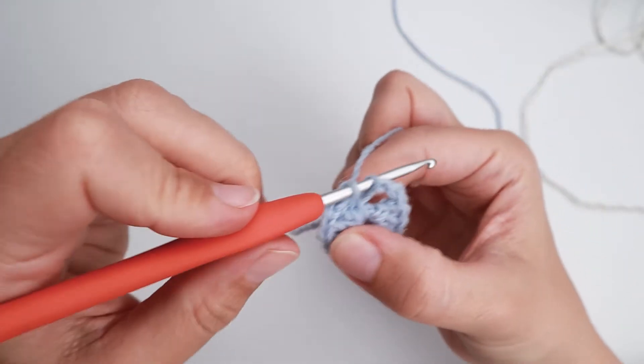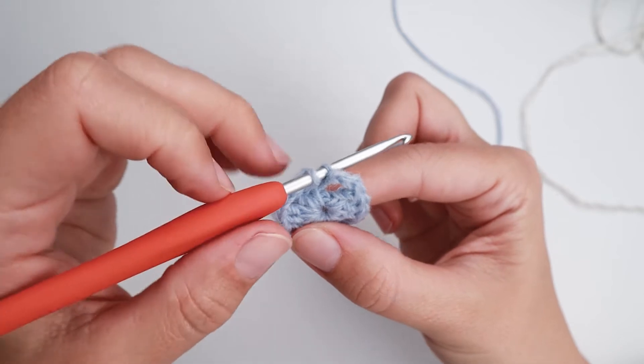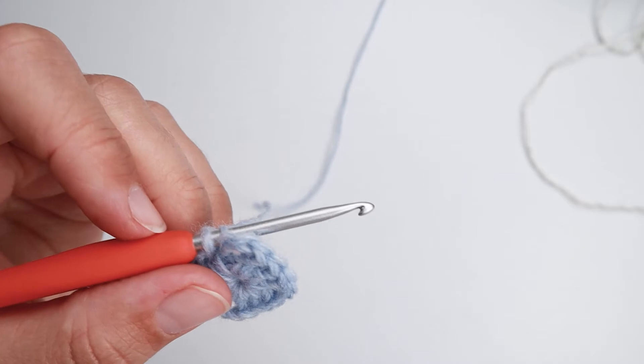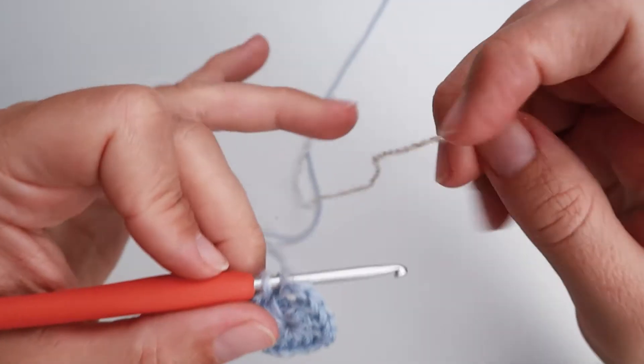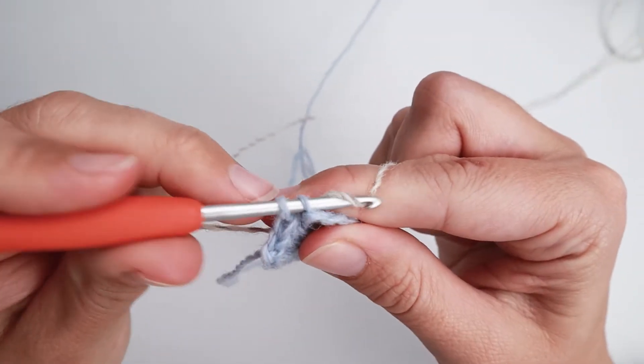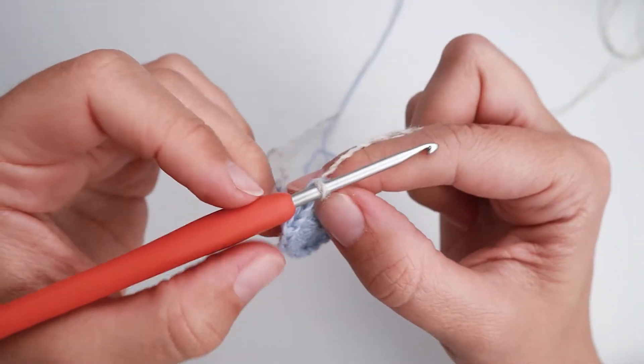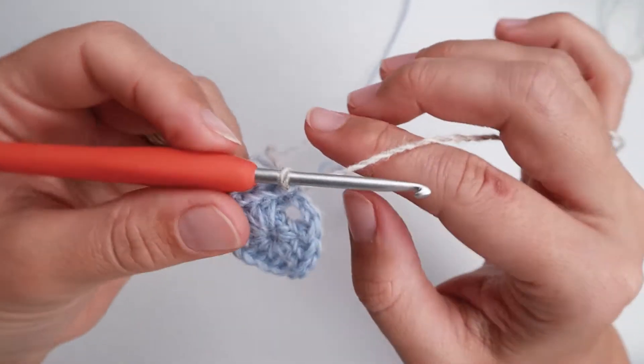So you insert your hook as you would usually do, but then instead of finishing with the same color, you grab the new color and pull it back like that. And now you're ready to continue as the pattern describes.